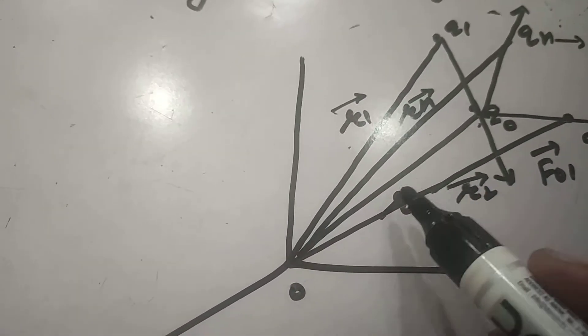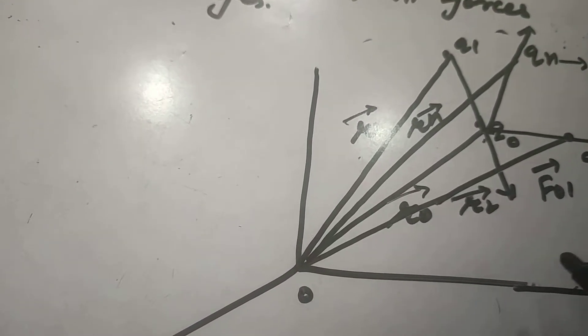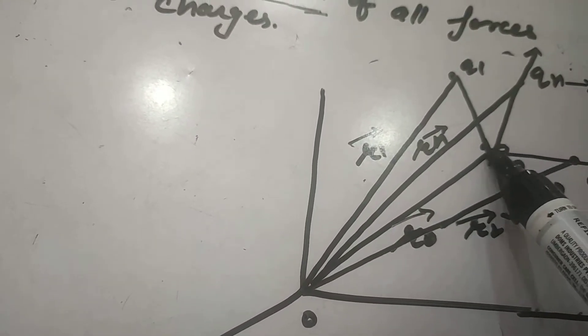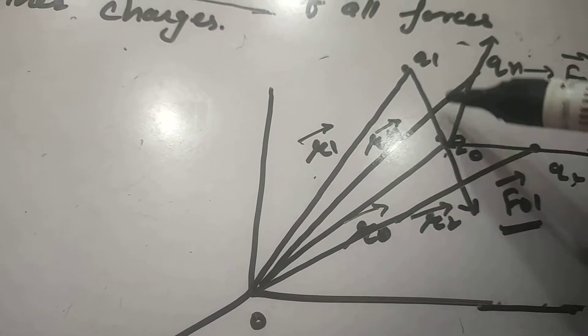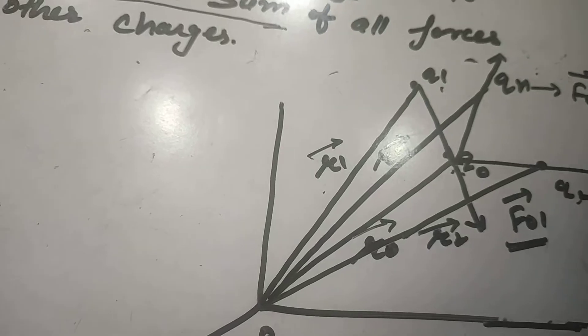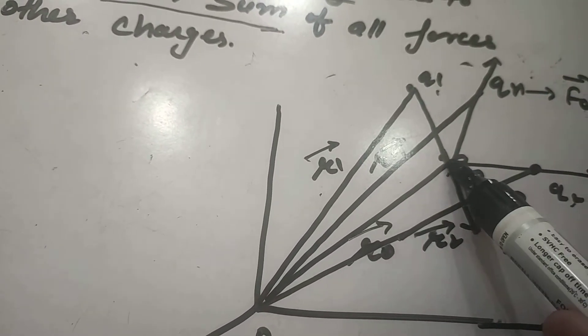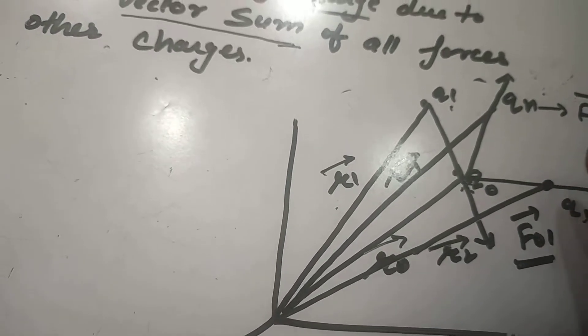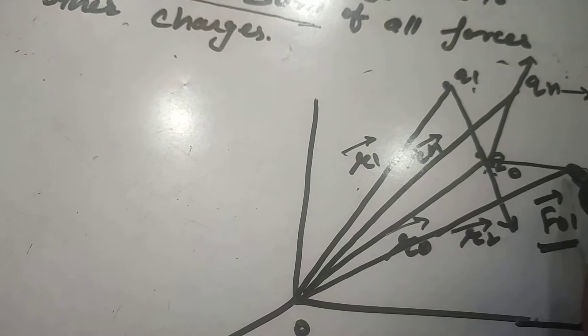Similarly r0 is the position vector of charge q naught. Now the various forces acting on this are f naught 1, which is acting on q naught due to q1, f naught 2, which is acting on q naught due to q2, so the direction will be in this direction.